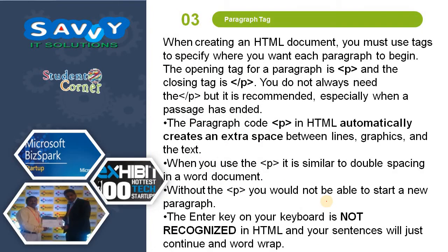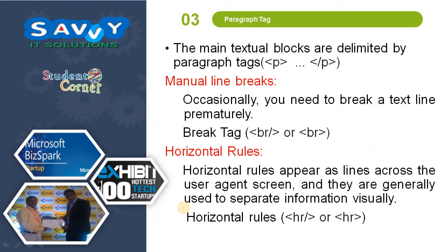Now the paragraph tag. When creating an HTML document, you must use tags to specify where you want each paragraph to begin. The opening tag is p and the closing tag is /p. You do not always need to put /p, but it is recommended, especially when a passage has ended. The paragraph tag automatically creates an extra space between lines, graphics, and text. Without the p tag you would not be able to start a new paragraph, as the Enter key on your keyboard is not recognized in HTML and sentences will just continue and word-wrap.